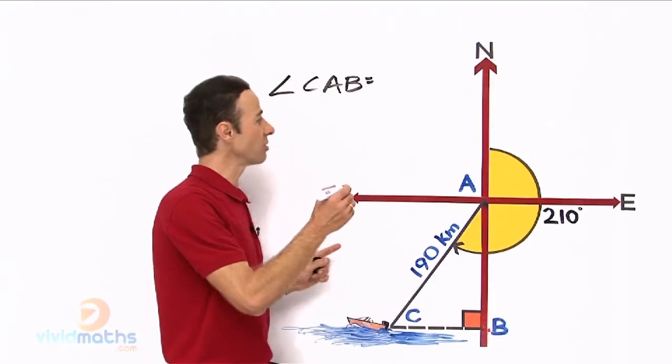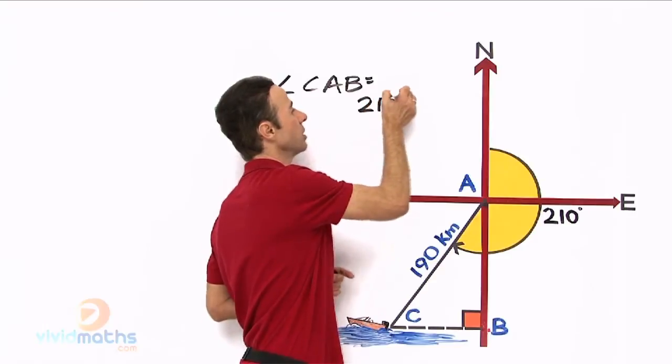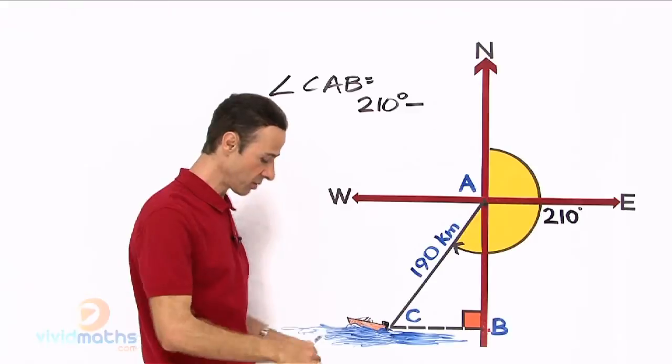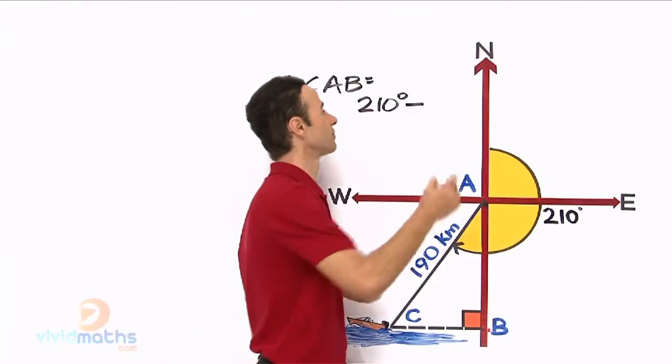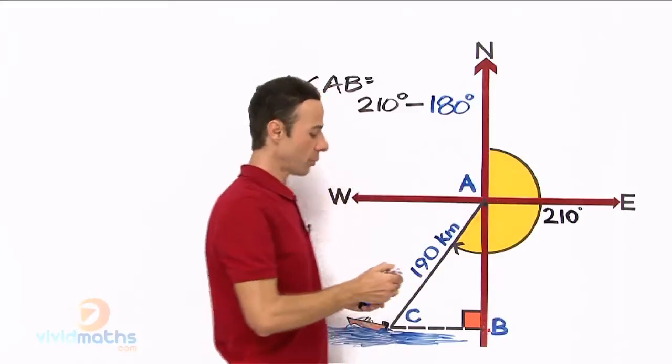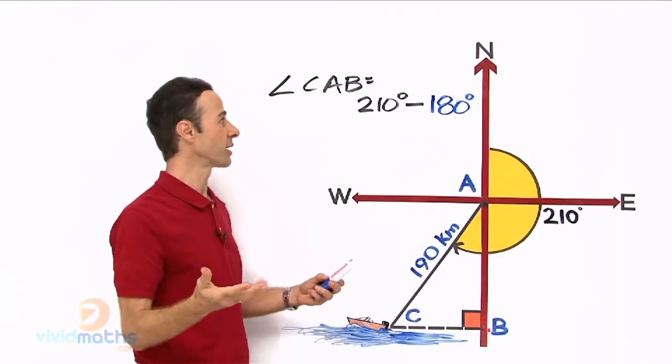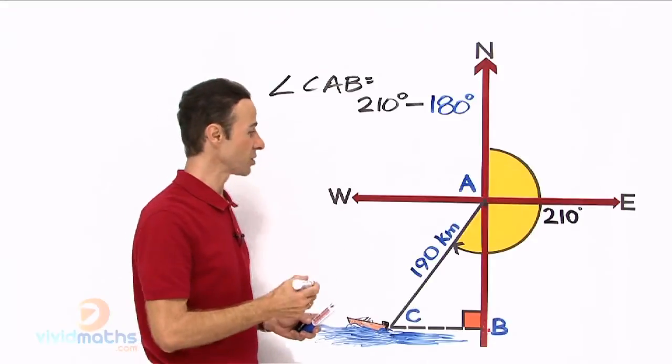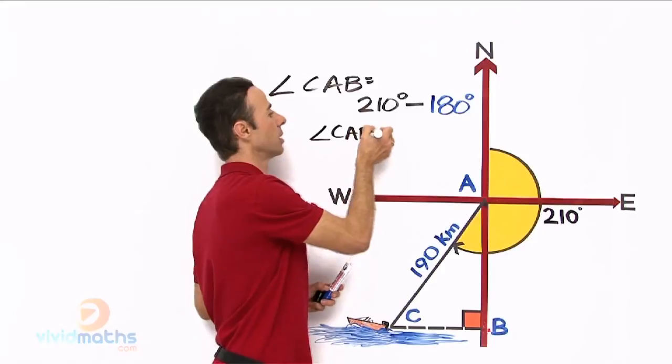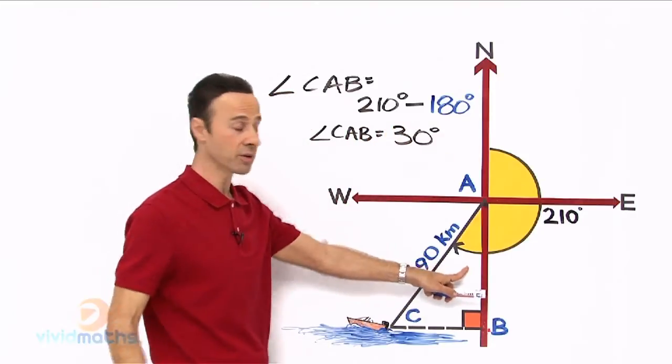So the closest vertical is 180, so let us take that away from 210. That will leave us what is in there. So that is going to be 210 degrees take away the vertical which is 180 degrees. Let us do that, so 210 take away 180 on your calculator is going to yield an answer of angle CAB equals 30 degrees.